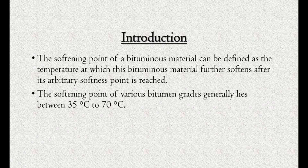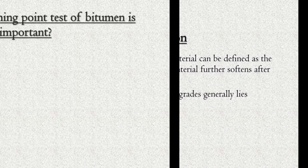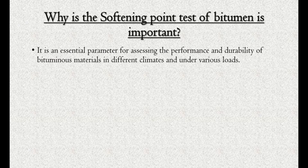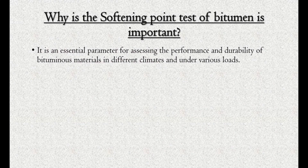The softening point of various bitumen grades generally lies between 35 degrees Celsius to 70 degrees Celsius. The softening point test is an essential parameter for assessing the performance and durability of bituminous material in different climates and under various loads.